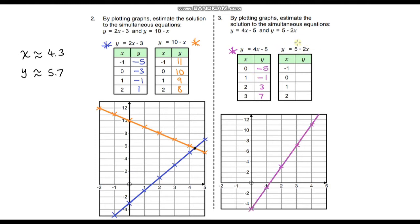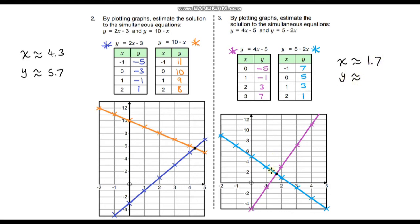Now for y equals 5 minus 2x: when x equals negative one, we have 5 plus 2 times negative one which gives positive two, so 5 plus 2 equals 7. With gradient negative two we go down by two each time, giving 5, 3, and 1. The point of intersection is approximately at x equals 1.7, and the y value also looks to be approximately 1.7.